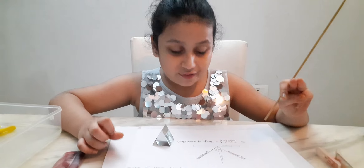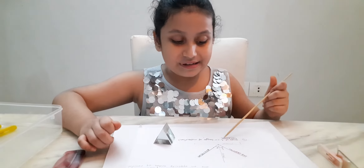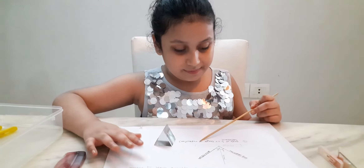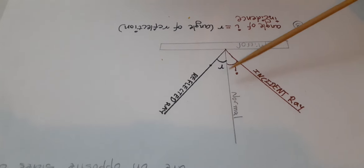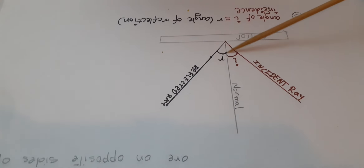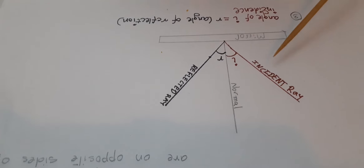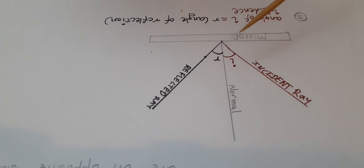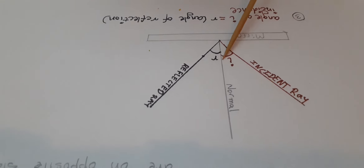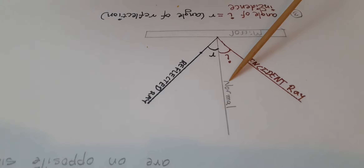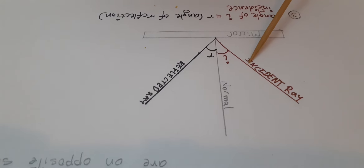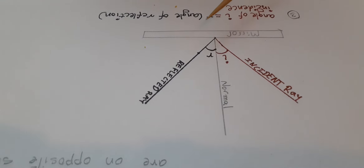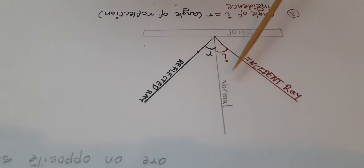The third law of reflection is that the angle of incidence equals the angle of reflection. The angle of incidence is formed between the normal ray and the incident ray. And the angle of reflection is formed between the reflected ray and the normal ray.